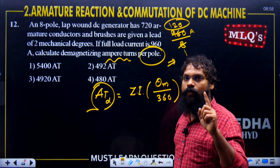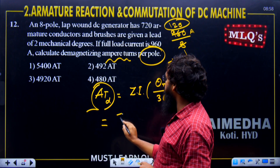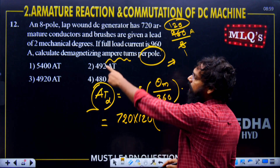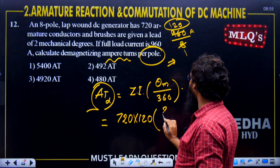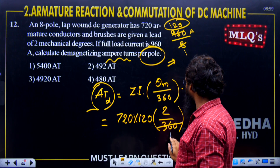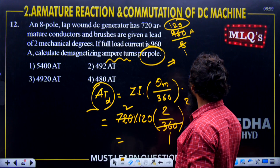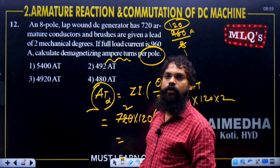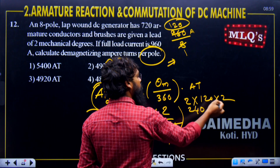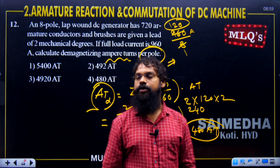That means per one parallel path, current = 120 A. Substituting: Z = 720, I = 120, θ_m = 2, denominator = 360. AT = 720 × 120 × 2 / 360 = 480 ampere-turns. So the demagnetizing ampere-turns per pole = 480. Option number 4 is correct.